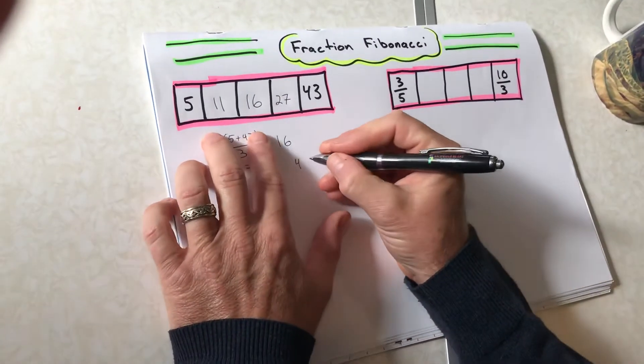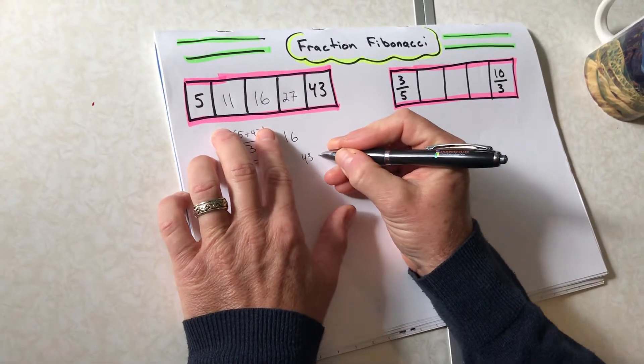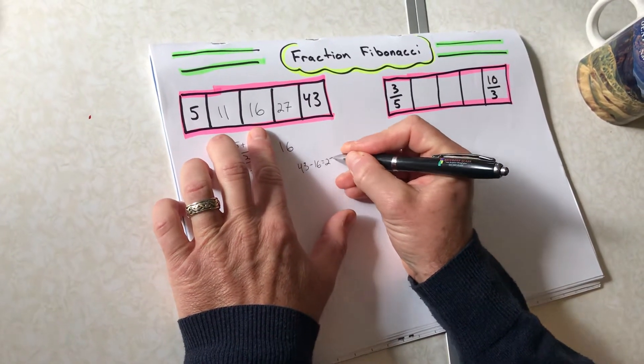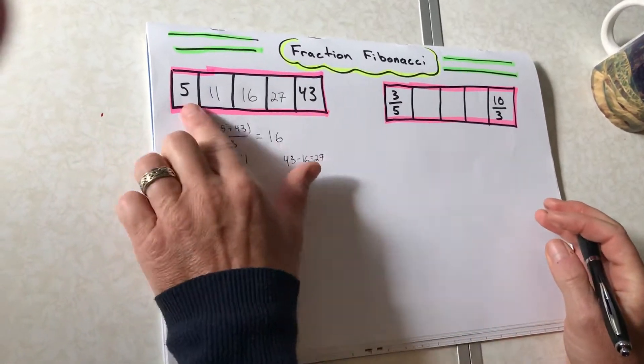All right, so I get my Fibonacci sequence. Let me just finish that. 43 minus 16 equals 27. All right, so I got my Fibonacci sequence here.